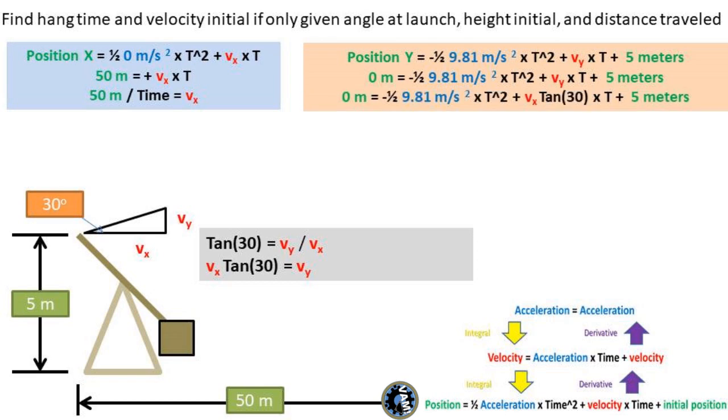Now, let's go back to the y position formula. We can take the conversion formula we found of v sub x times tangent of 30 equals v sub y, and plug it into the y position formula. We can then take the v sub x equals 50 meters over time, and substitute it into this formula.